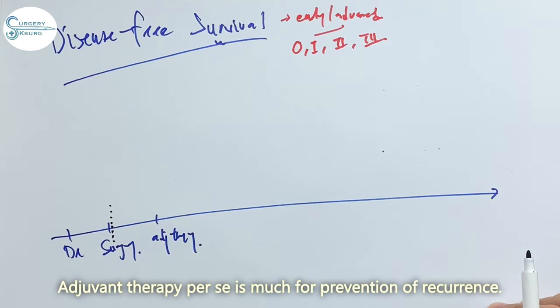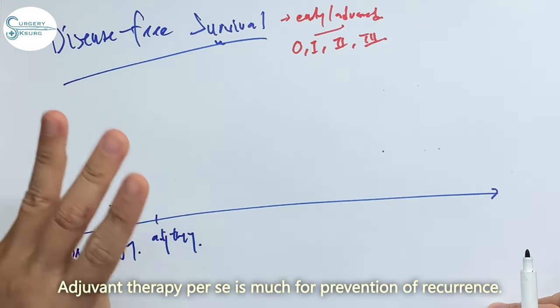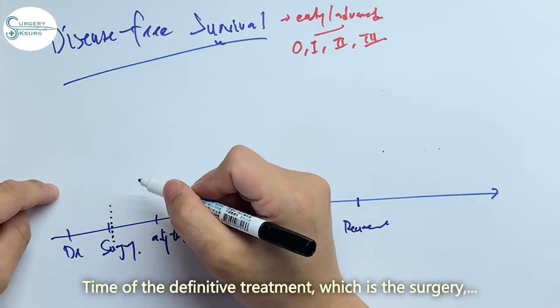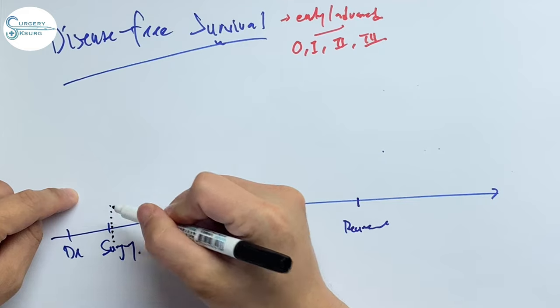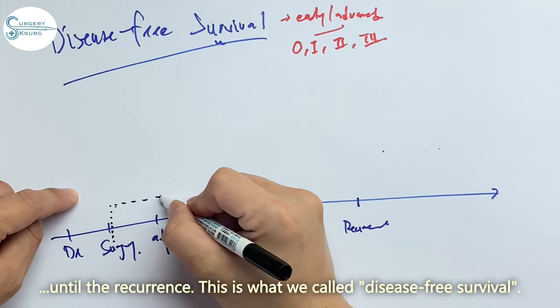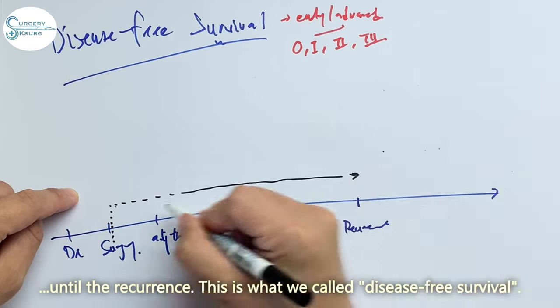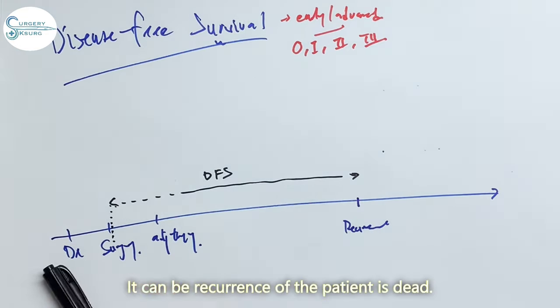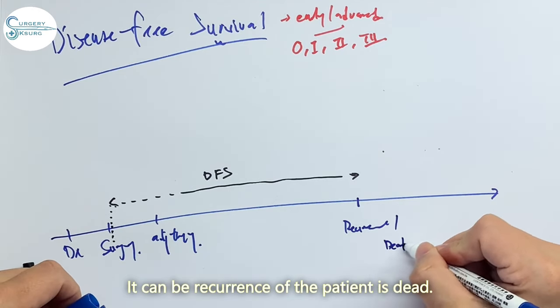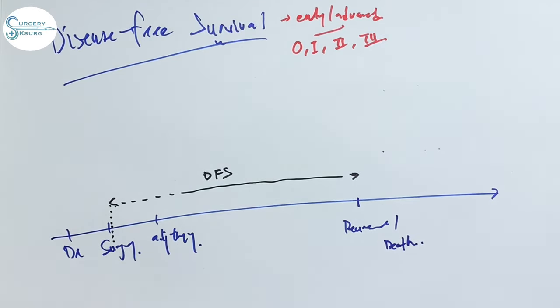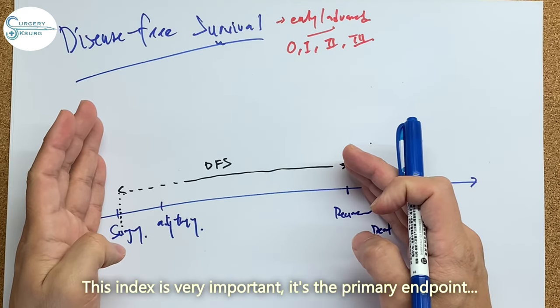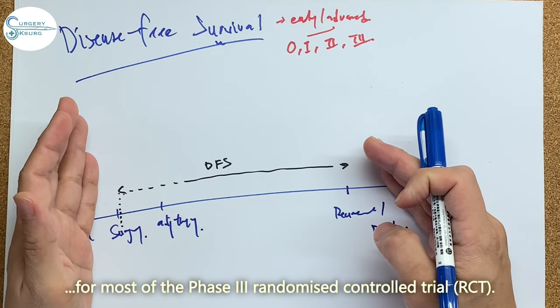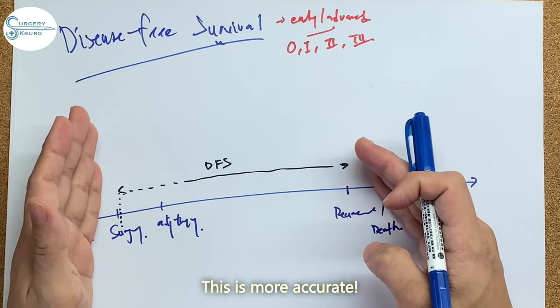Time of definitive treatment which is the surgery until the recurrence, this is what we call disease-free survival. It can be recurrence or the patient dies. This index is very important. It's a primary endpoint for most of the phase 3 randomized control trials. It is more accurate.